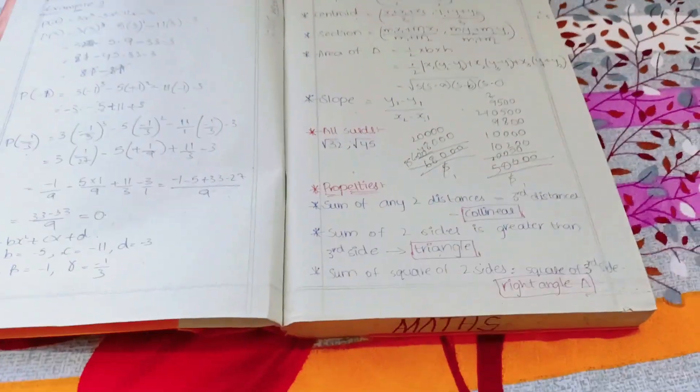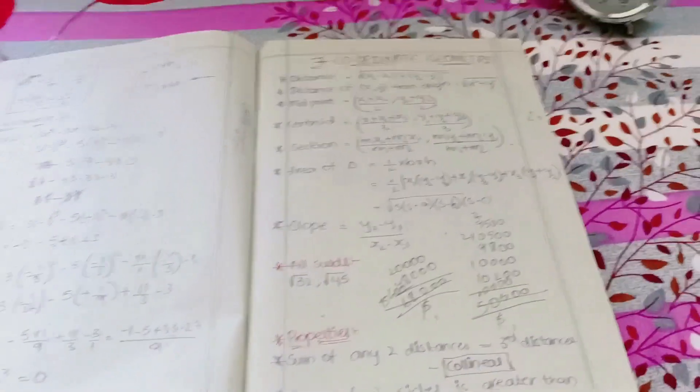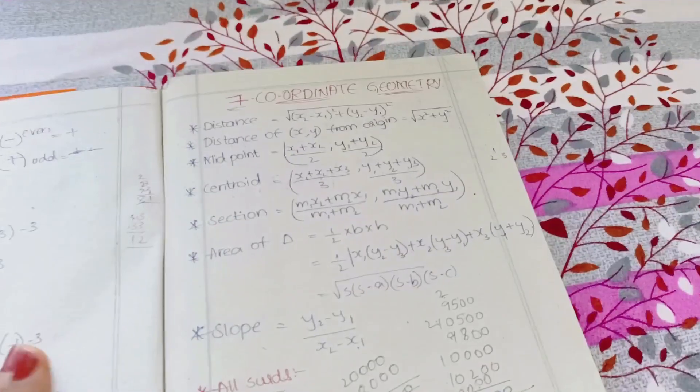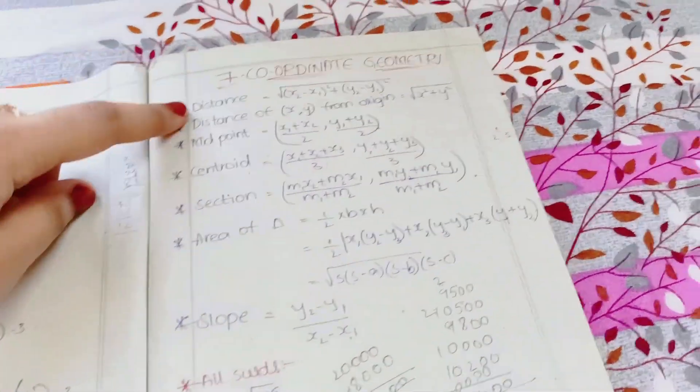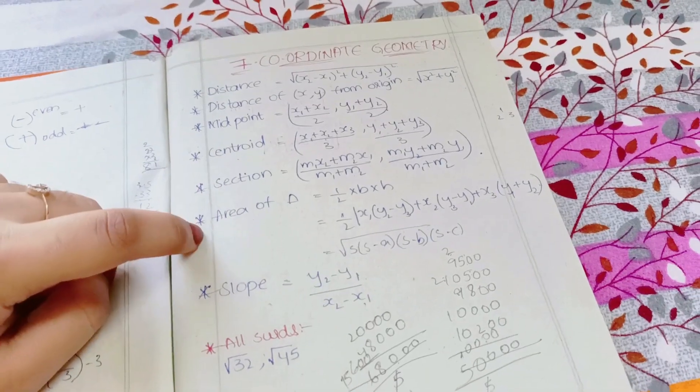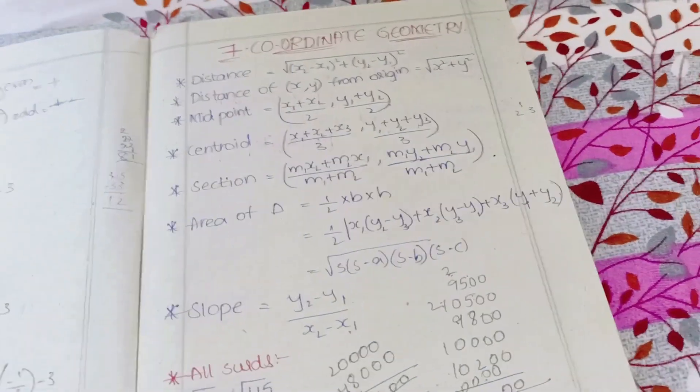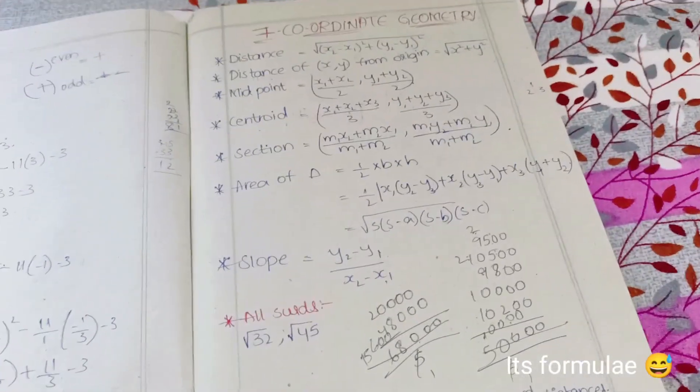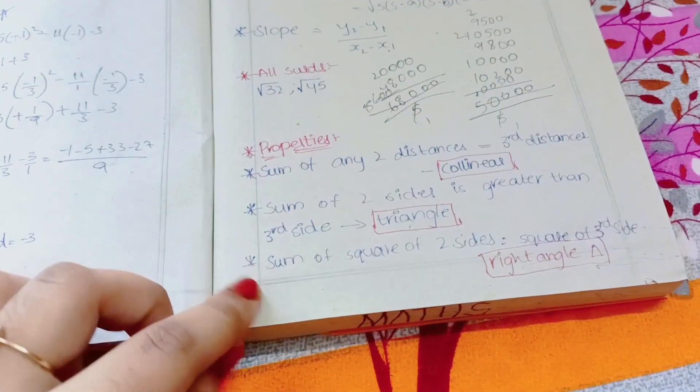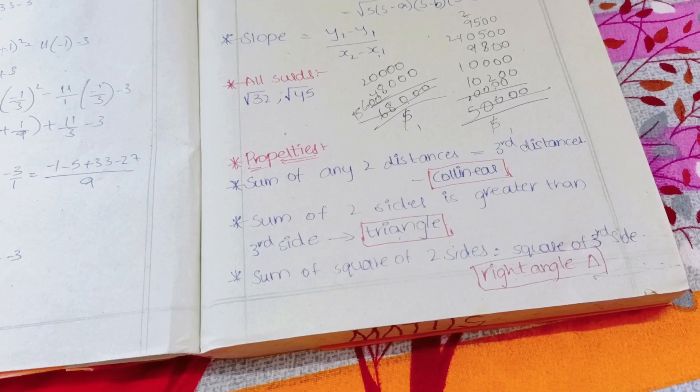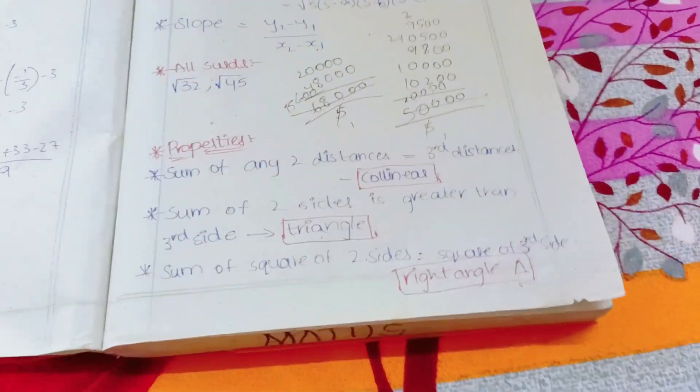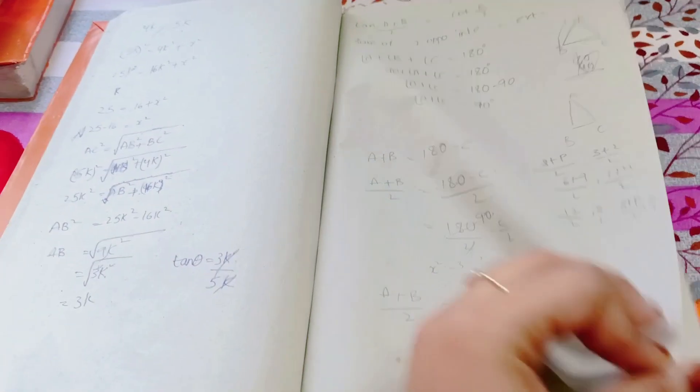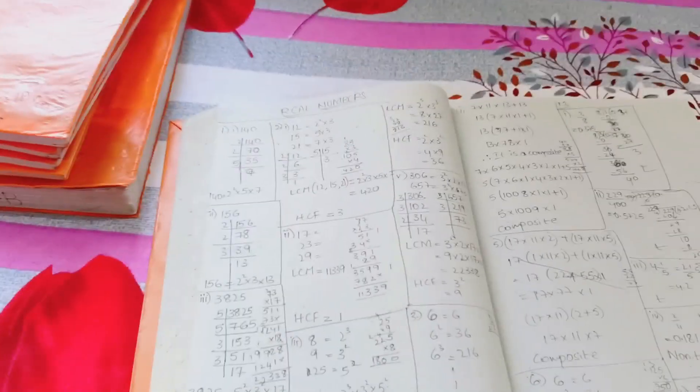Let me show you how I used to revise all the chapters one by one for quick revision. First, coordinate geometry chapter - for that we had some formulas: distance formula, midpoint, centroid, section formula, area of triangle, slope. All the formulas are written in one paper, so revise all the formulas, be perfect with them, don't be doubtful. You have to know some properties of square, triangle, rectangle, right angle triangle, parallelogram because you'll use these in four marks and eight marks problems.